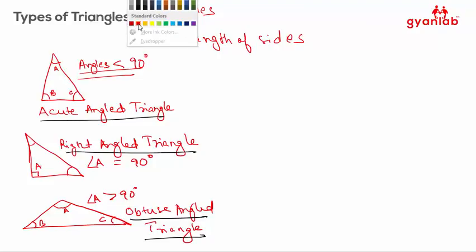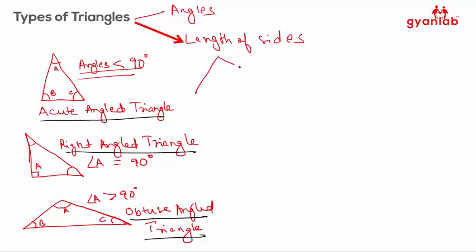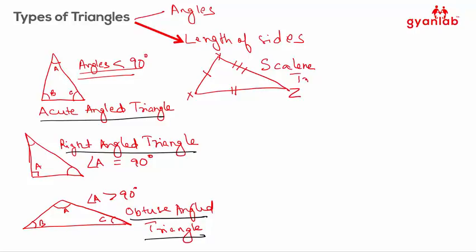Now we'll see the classification based on the length of the sides. If I draw a triangle where this side is a different length, this side is a different length, and this side is a different length — naming the triangle X, Y, and Z — all the lengths XY, YZ, and XZ are different. In that case it is a scalene triangle.